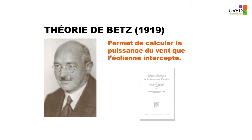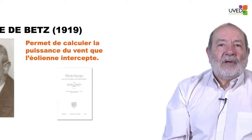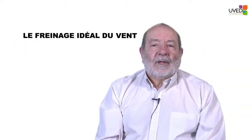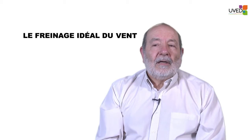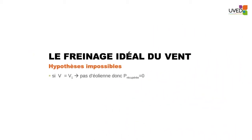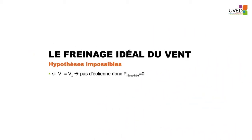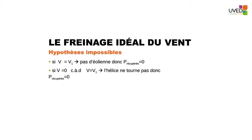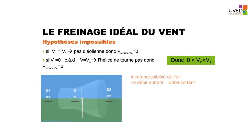Albert Betz was a German physicist who introduced a theory according to which we can calculate the wind power that is caught by a wind turbine. If we place an obstacle in an airflow, the obstacle slows down the air velocity. And if it is a wind turbine, behind the wind turbine — downstream of it — the wind velocity will be lower than before the windmill.